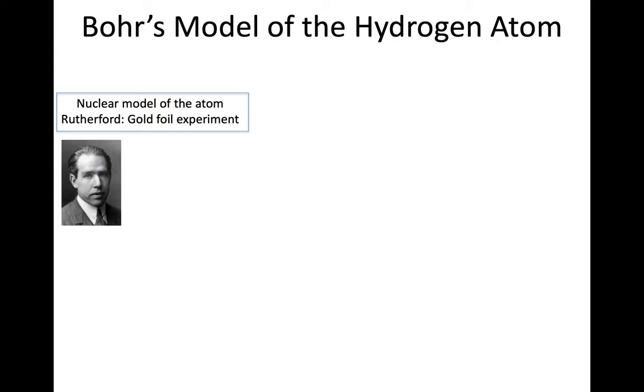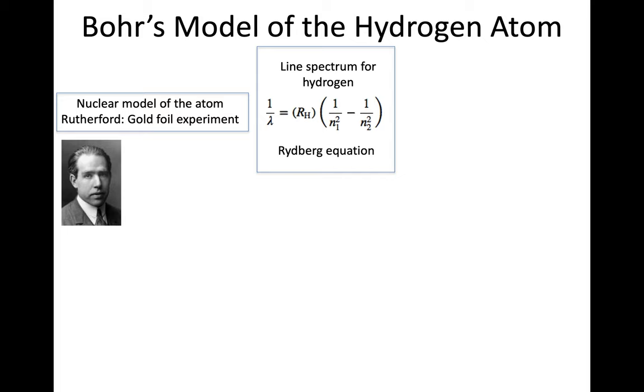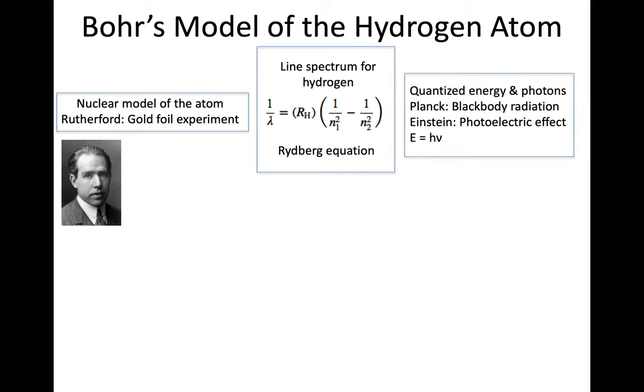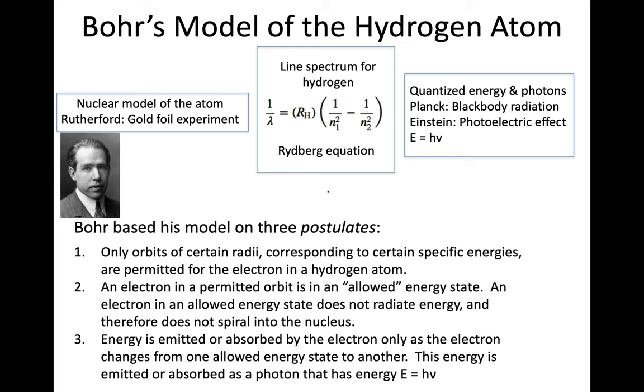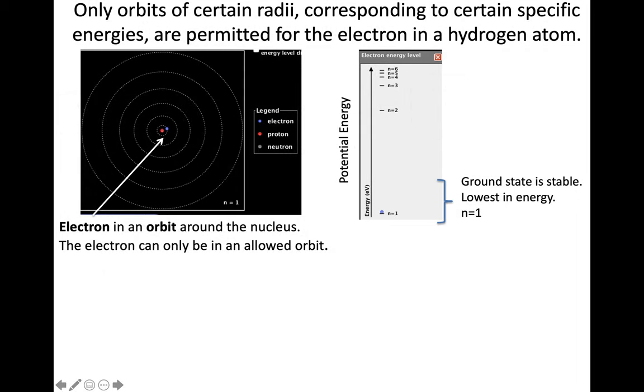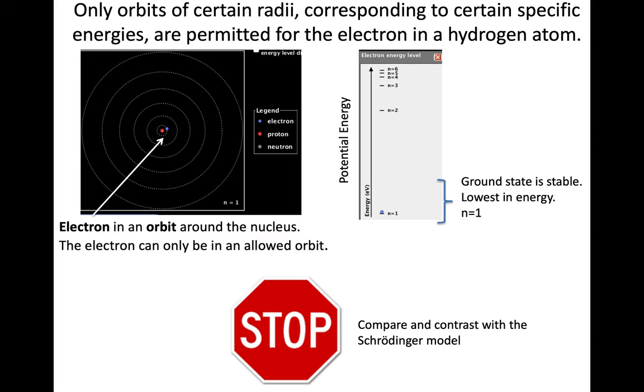In Bohr's model of the hydrogen atom, he's bringing together Rutherford's nuclear model, this line spectrum for hydrogen, and also the idea of quantized energy and the expression E equals h nu. He's going to have three different postulates. The first is that the orbits of the electron can only have certain radii. There will be allowed transitions between those, and that those allowed transitions are quantized and corresponding to the energy E equals h nu. Here we see a representation for the different energy levels in Bohr's model. The one on the left here is showing a spatial representation, and the one on the right is showing the different energy levels, beginning with n equals 1, the ground state.